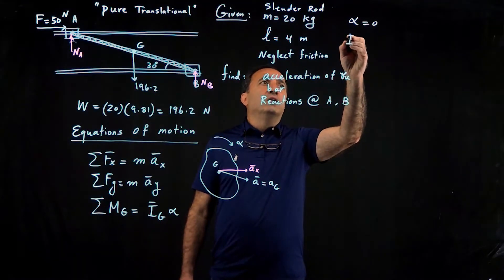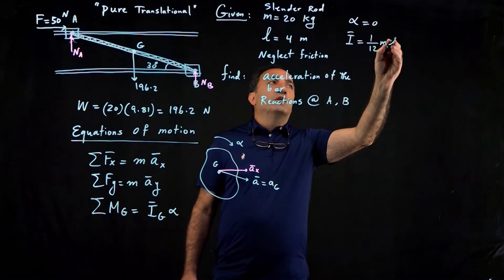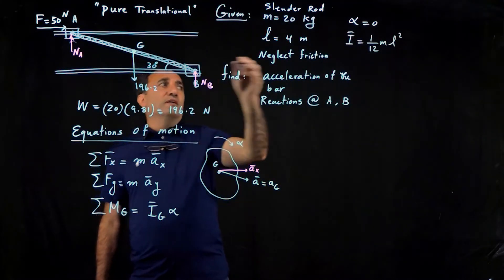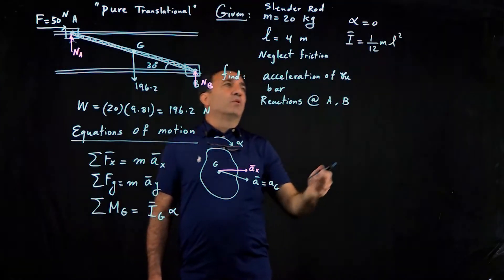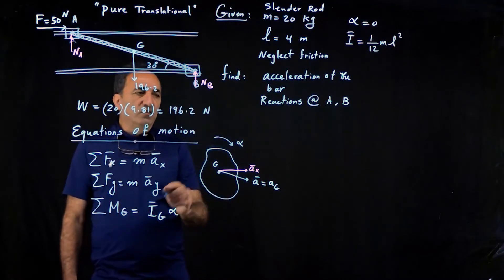So we don't even have to bother calculating or determining the i-sub-g. Now, i-sub-g or i-bar for a slender rod, if it's rotating about its centroidal axis, you can get that from the table, 1/12 mL squared. But it's going to be irrelevant for this problem since alpha is zero.